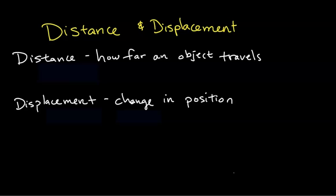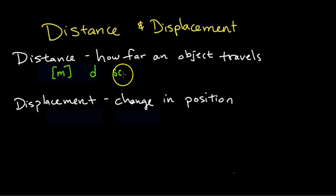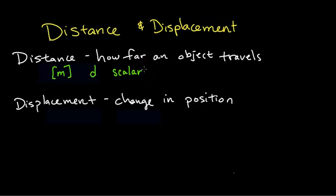In this video, we're going to learn about distance and displacement. Distance is how far an object travels, and the unit for distance is meters or any other length unit. The symbol we use for distance is the lowercase d, and it is a scalar, which means that it only has a magnitude and no direction.